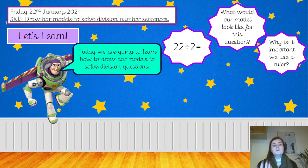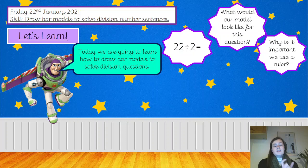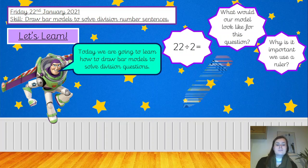So all of our groups are equal size. For example, if we wanted to divide something by four, you would want to make sure that the bars at the bottom were the same size. You wouldn't want one big one and three really tiny ones because you wouldn't be able to share the counters as easily. Well done if you said that.